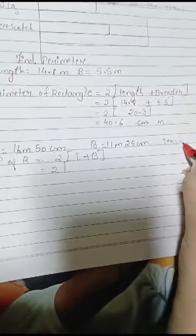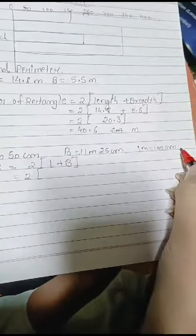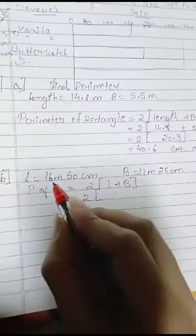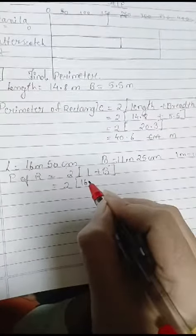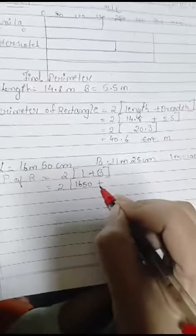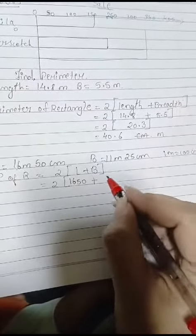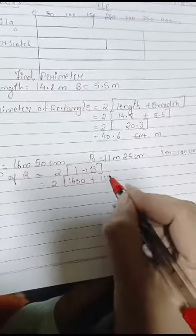1 meter is equal to 100 centimeter. So this will be 1650 plus breadth will be 1125.